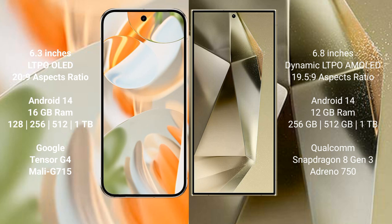Google Pixel 9 Pro runs on Android 14. Samsung Galaxy S24 Ultra also runs on Android 14. Google Pixel 9 Pro comes with 16GB RAM, and 256GB, 512GB, or 1TB internal storage, powered by the Google Tensor G4 processor. Samsung Galaxy S24 Ultra comes with 12GB RAM, and 256GB, 512GB, or 1TB internal storage, powered by the Qualcomm Snapdragon 8 Gen 3 processor.